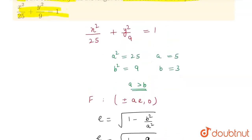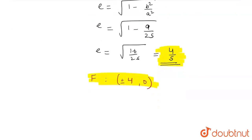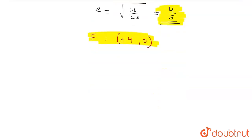Now I also need to find the coordinates of the vertices and the major axis length. The coordinates of the vertices are (±a, 0), so the vertices are (±5, 0).